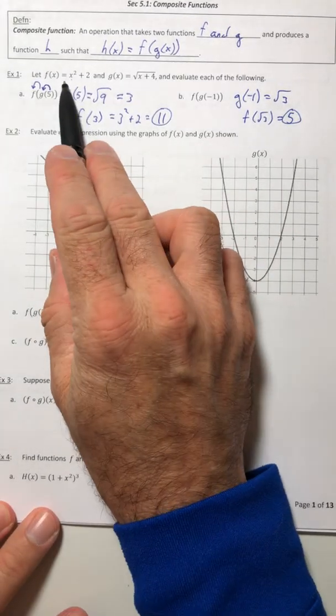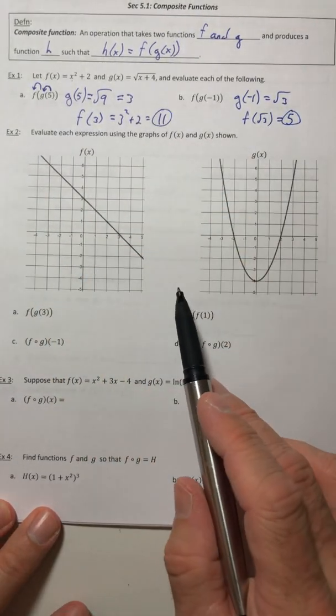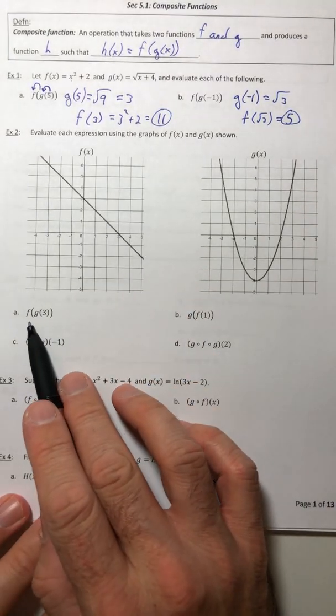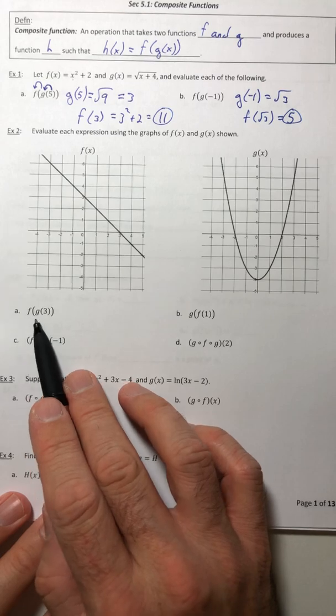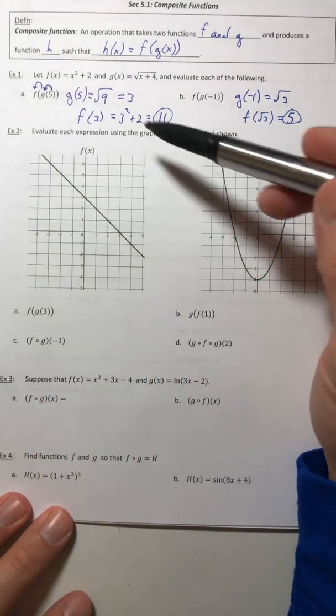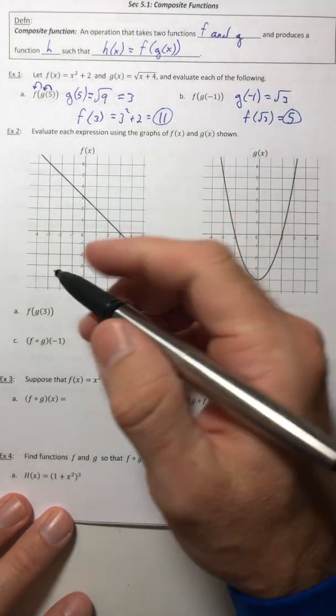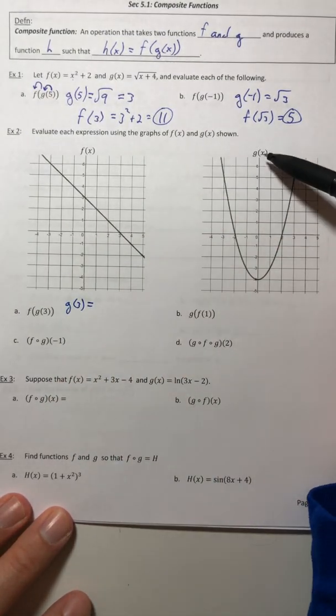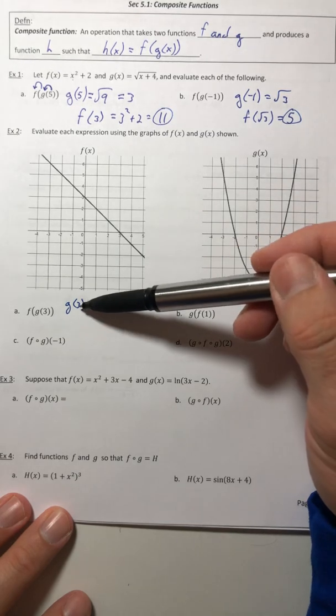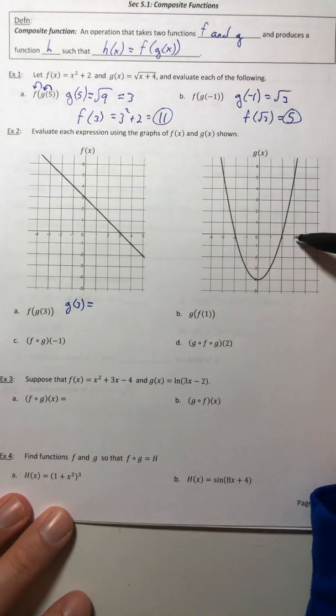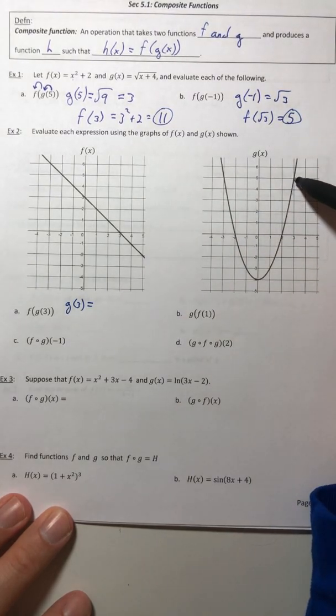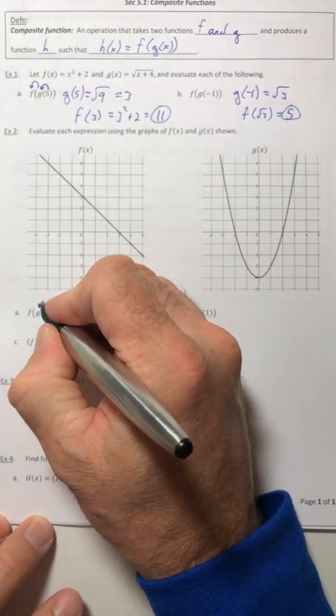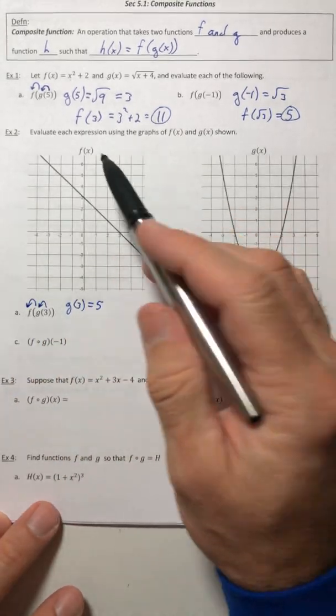That's how you can do it with actual functions. Let's see how we can do this if we're working off of a graph. So part a, f(g(3)). It's basically the same type of thing. Figure out what g(3) is. Looking at the g graph, when x is three, the y coordinate is five. So g(3) is 5.